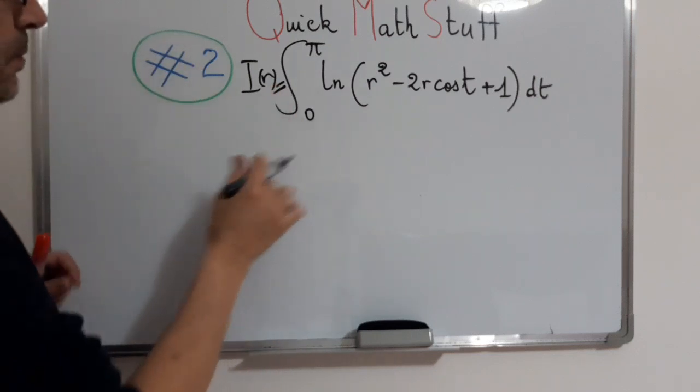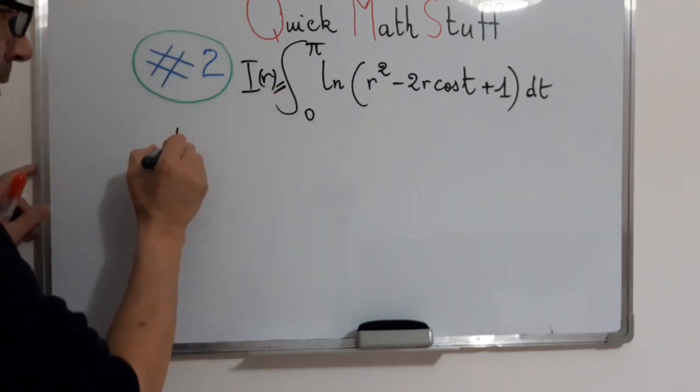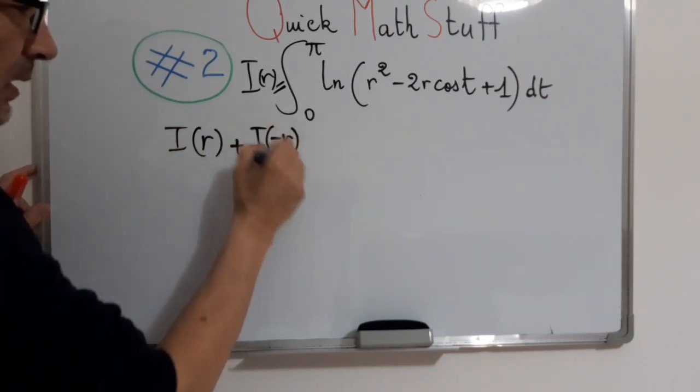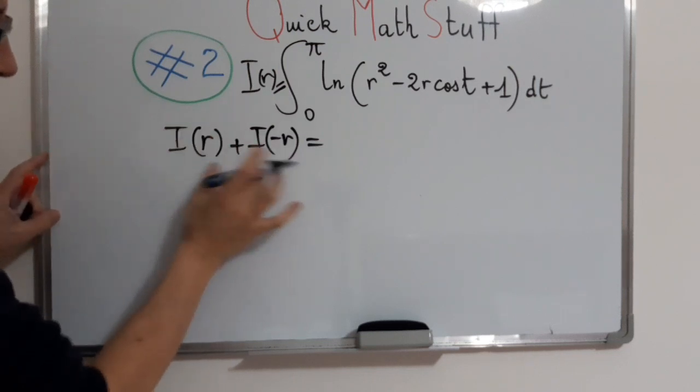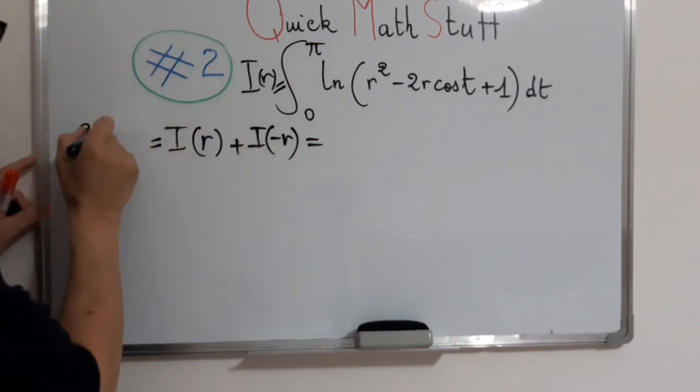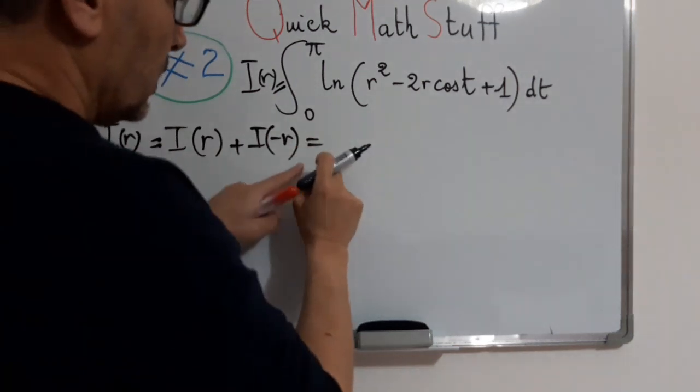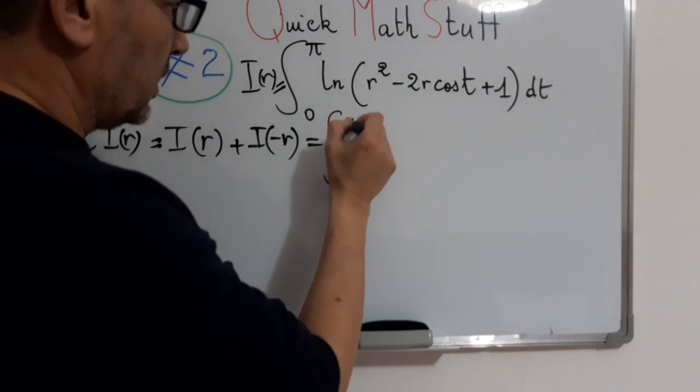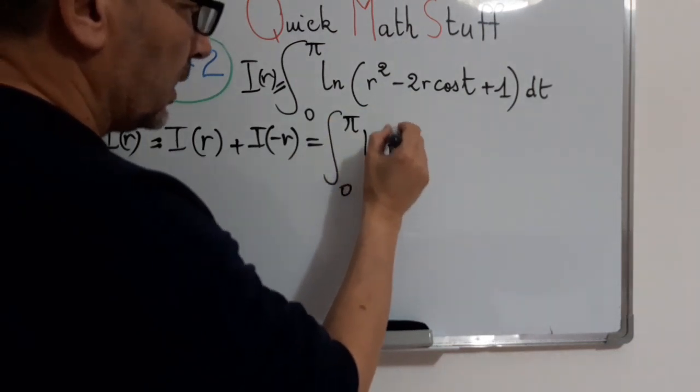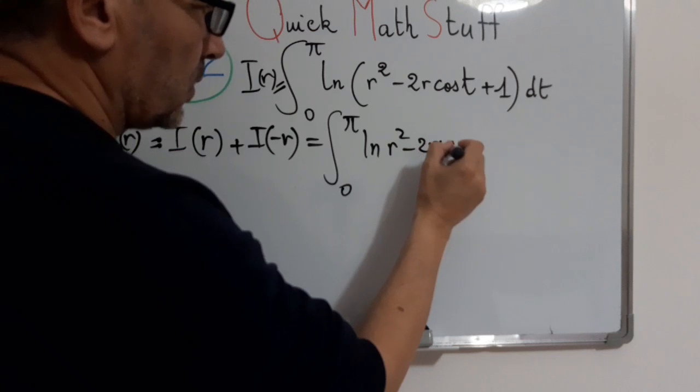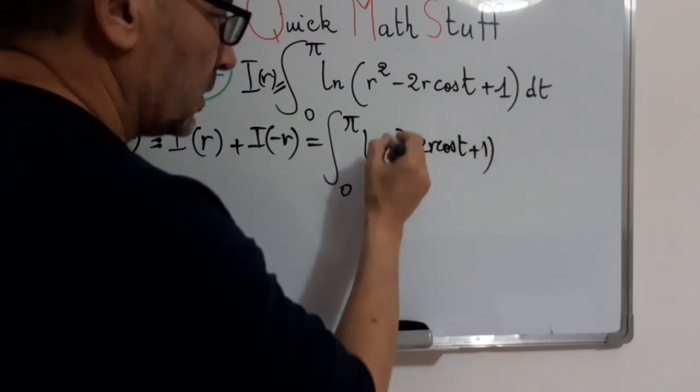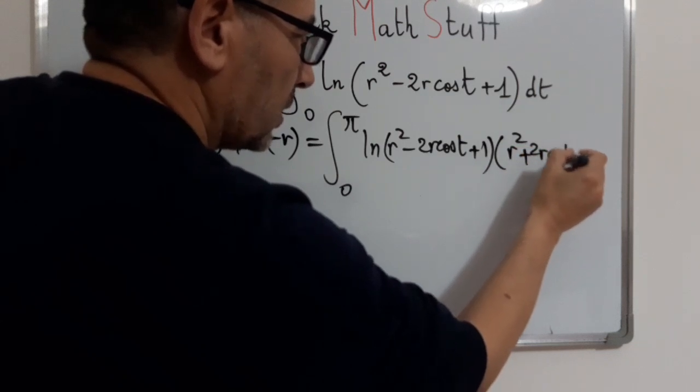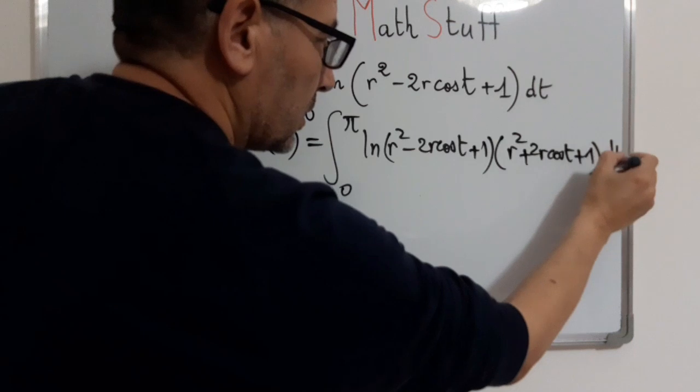Now the following step will be to do the addition: I of r plus I of minus r. So by logarithm properties, these two terms equal 2 I of r, which equals integral from 0 to π of ln of r squared minus 2r cos t plus 1 times r squared plus 2r cos t plus 1 dt.